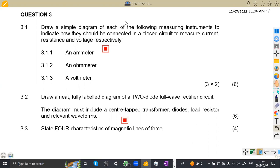We are given 3.1 to draw a simple diagram. Draw a simple diagram of each of the following measuring instruments to indicate how they should be connected in a closed circuit. So how can we connect an ammeter in a circuit? We know that an ammeter is actually connected in series.